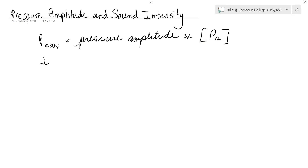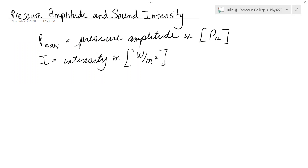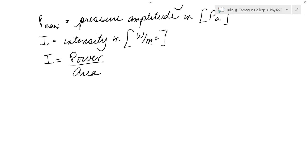The other quantity of interest is I, which is intensity. The units for intensity are watts per square meter, and based on those units you can tell that it must be power over area. So the intensity of sound is related to the power of the sound divided by the area through which that sound is passing.